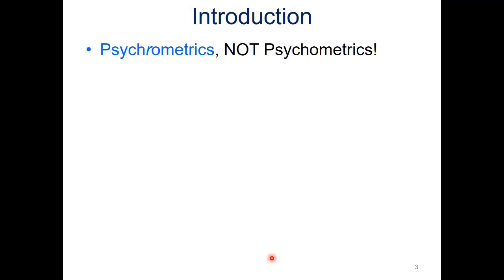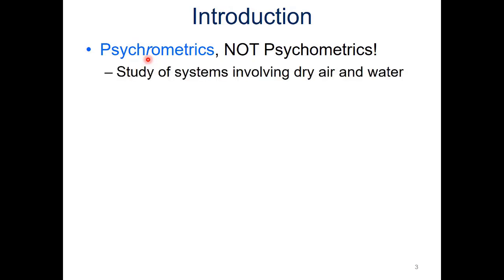So first of all, this is psychrometrics, not psychometrics. That little R right there is kind of important. The difference between these two is both of them are metrics — we're both looking at studying something and getting information about it. But with psychrometrics, we're looking at the study involving dry air and water. The 'psychro' comes from cooling, so we're looking at a lot of cooling-based systems when we're using dry air and water.